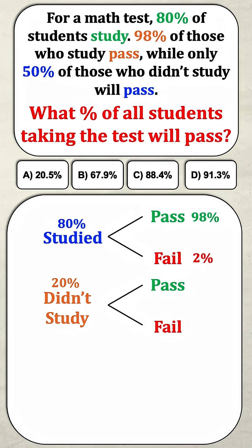Out of the students who didn't study, we're told that 50% of them would pass, and of course that means 50% of them would fail. Now the question asks what percentage of all the students will pass, so we're going to isolate the two branches that end up with passing grades. Now all we have to do is add up the probabilities.